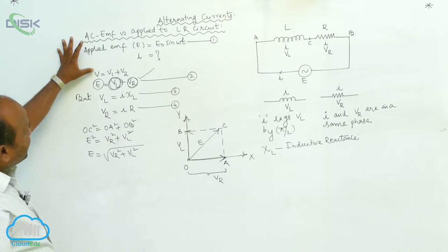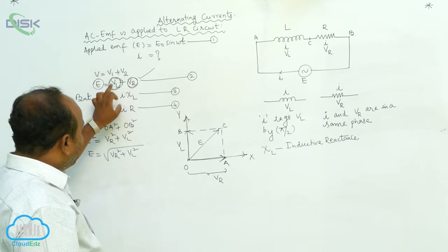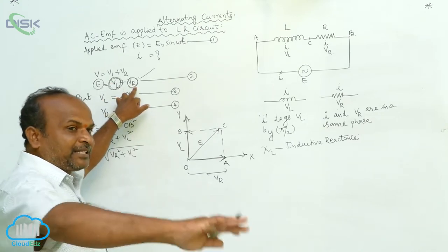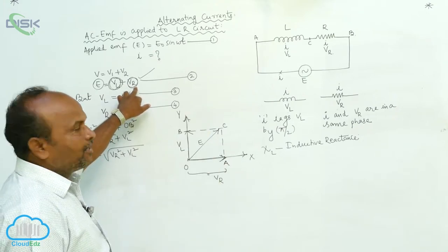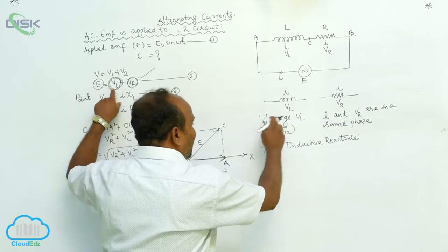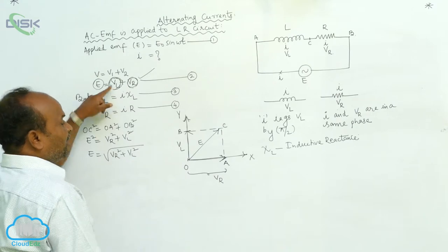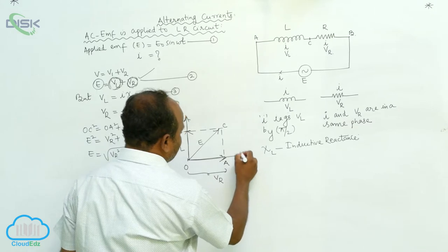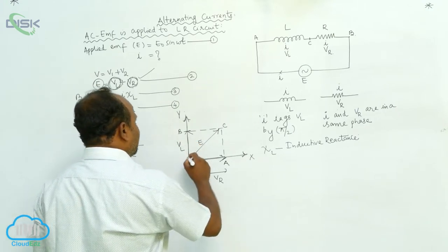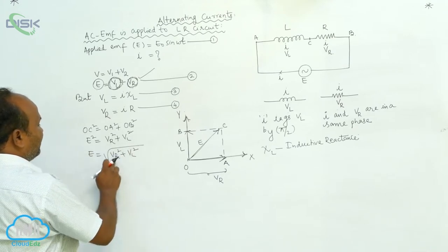In scalar form, V equals V1 plus V2. But here E equals VL plus VR, and in order to add VL and VR, both are not in the same direction. VR is taken along the x-axis. In the case of VL, as the current is lagged behind voltage by 90 degrees, VL is taken along the y-axis. Therefore, voltage across the resistance is along the x-axis and voltage along the inductor is on the y-axis. The resultant of these two voltages is the resultant voltage of the circuit, called E, equal to the square root of VR square plus VL square.